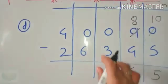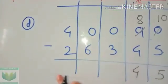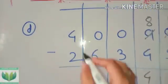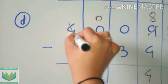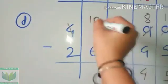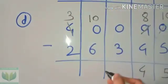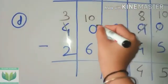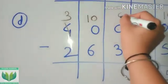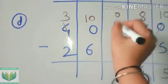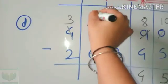Now 0 minus 3 is not going, and here 0 minus 6 is also not going. 4 minus 2 is not enough, so we have to take 1 from the 4. Here becomes 10 and 4 becomes 3. Again 0 minus 3 is not going, so we take 1 borrow from the 10. Now here becomes 10 and 10 becomes 9.